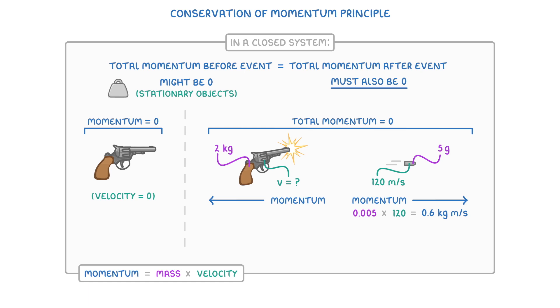Next, we want to try and find the gun's momentum. So again, we just do the mass of 2 times the velocity. But because we don't know what the velocity is yet, we can just write V for velocity. So the momentum will be 2V, where 2 is the mass in kilos, and V stands for the gun's velocity, which we're about to find out.